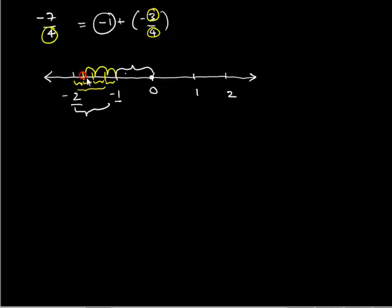Therefore, this is the required point. Let us represent this point with A which indicates negative 7 upon 4 on the number line. Therefore, A represents negative 7 upon 4 on the number line.